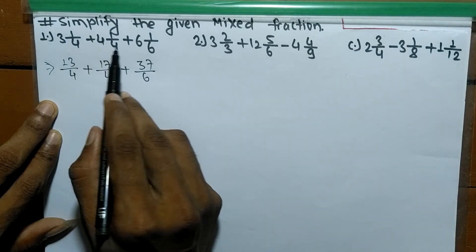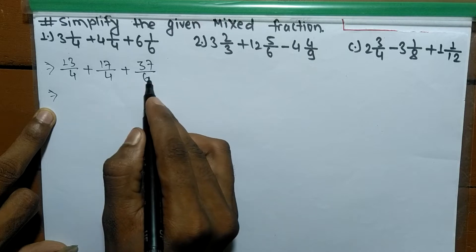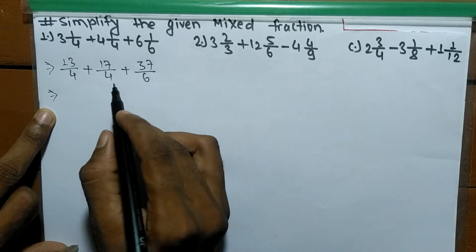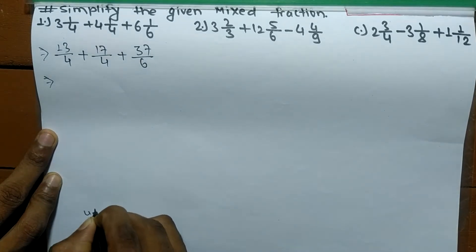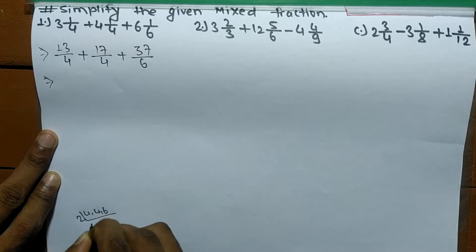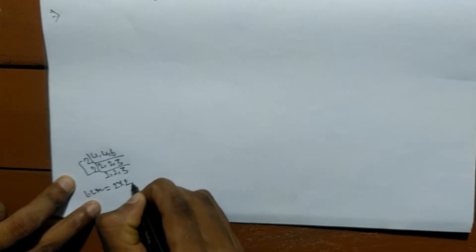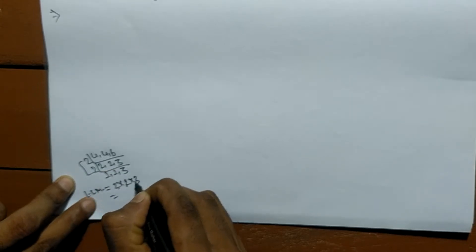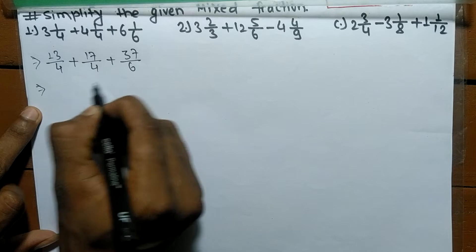We have converted all the mixed fractions into improper fractions. Now we have to take the LCM of all denominators because these are unlike fractions. The LCM of 4, 4, and 6: it is 2 times 2 means 4, 2 times 2 means 4, and 2 times 3 means 6. Again 2 times 1 means 2, 2 times 1 means 2, and 3 as it is. So the LCM becomes 2 times 2 times 3, which is 12.